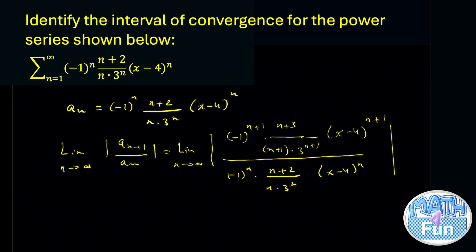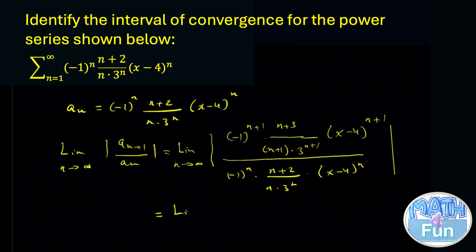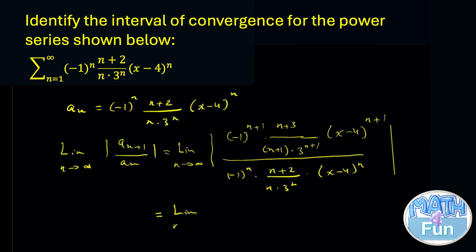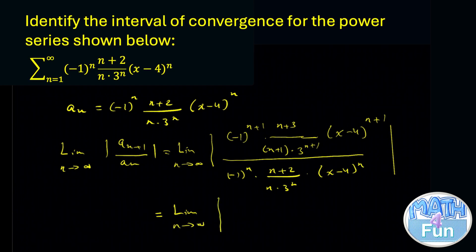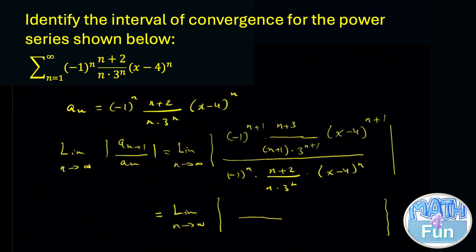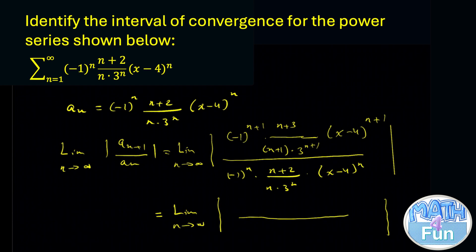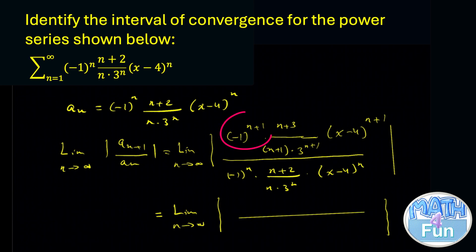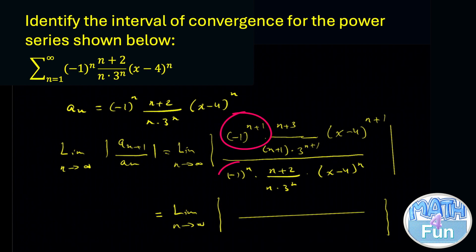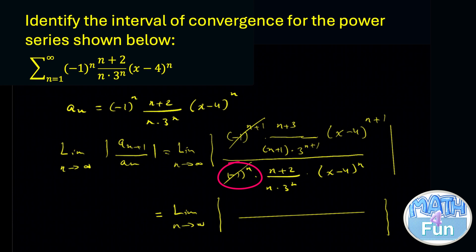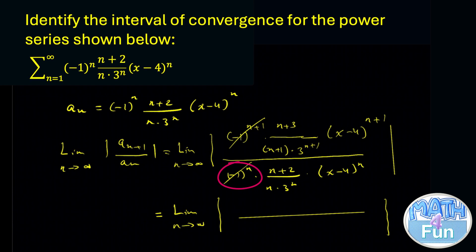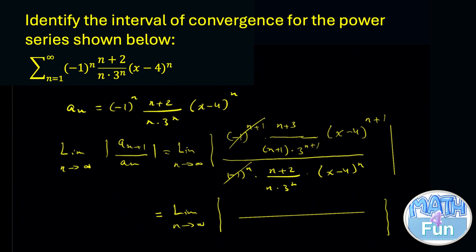Let me show you how to simplify. We take the limit as n approaches infinity of the absolute value of the big fraction. Now minus 1 to the power n plus 1 divided by minus 1 to the power n leaves minus 1 to the power 1, and since it is inside absolute value, we can ignore it.